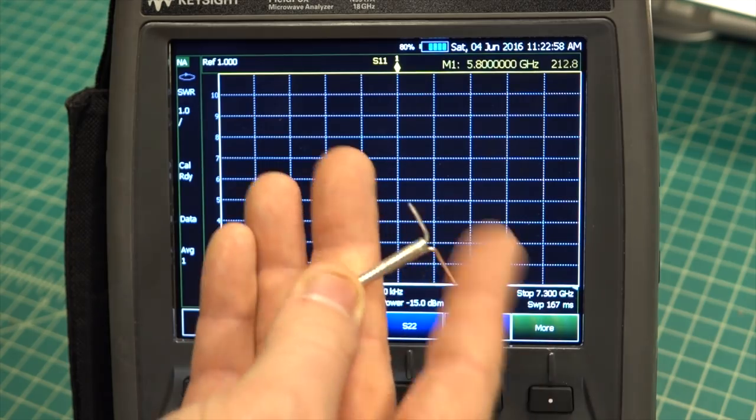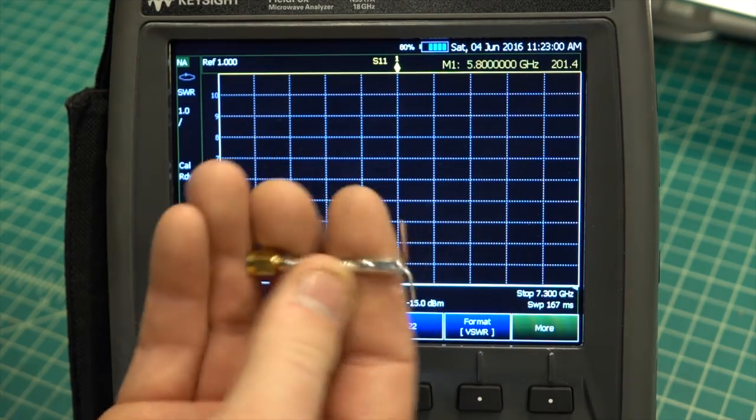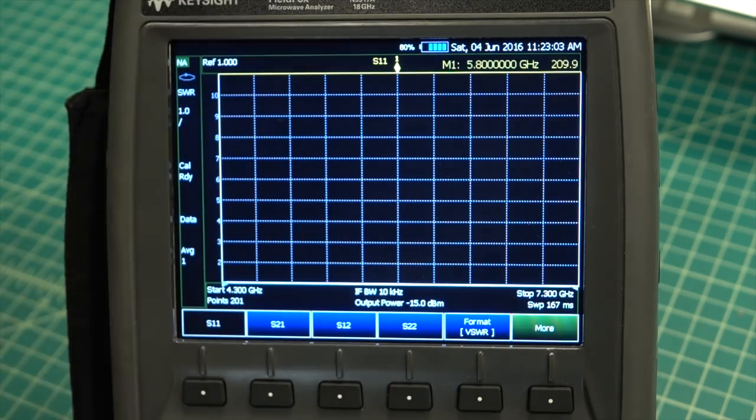To make this antenna I just took the monopole antenna from the last video and soldered a copper wire onto the outer conductor and trimmed it to about quarter wavelength.